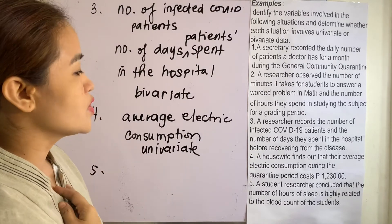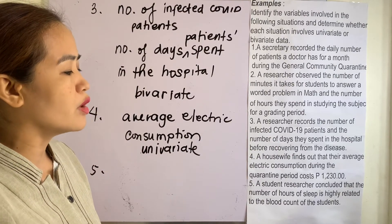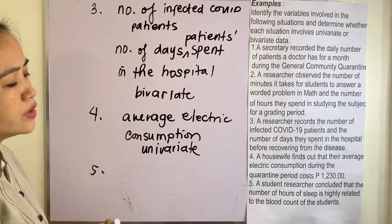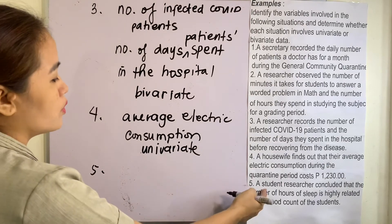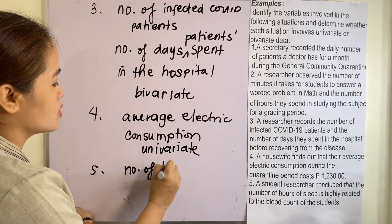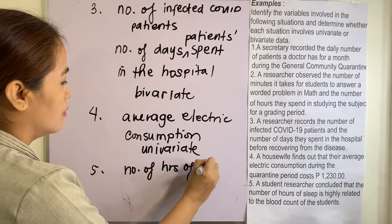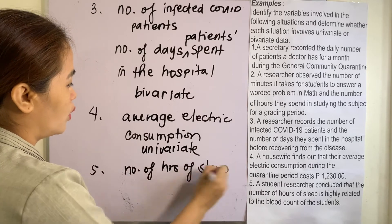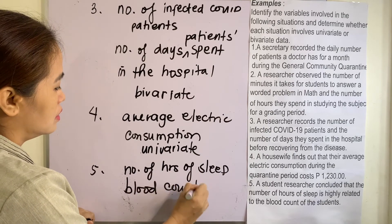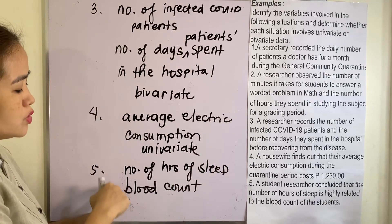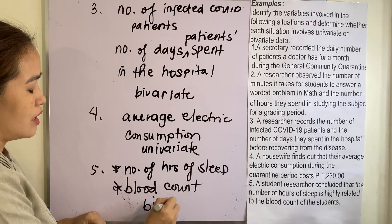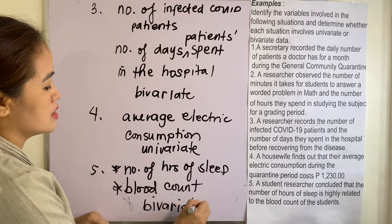Example five: a student researcher concluded that the number of hours of sleep is highly related to the blood count of the student. There are two variables involved: number of hours of sleep, and blood count of students. Therefore, this one is a bivariate data.